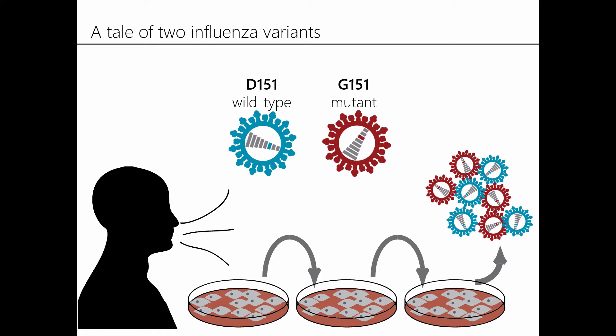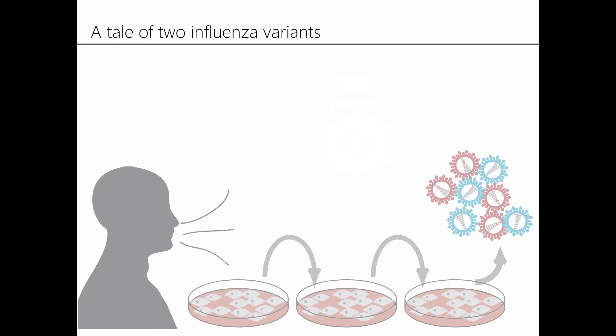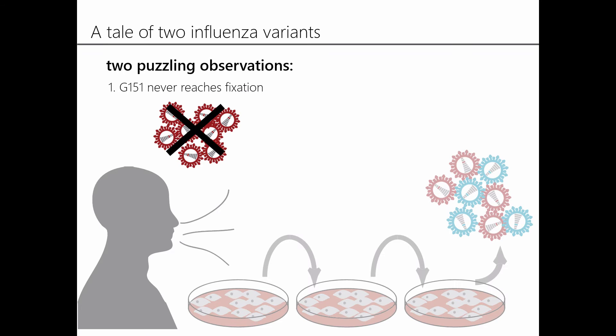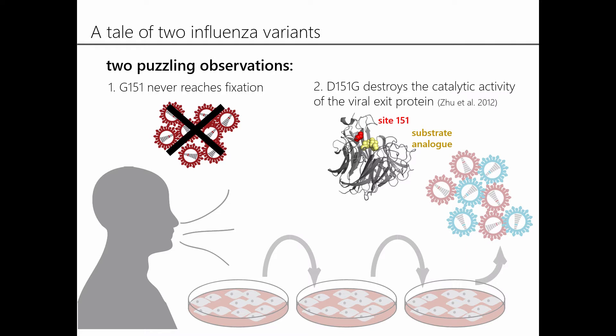Initially, people thought that this mutation was probably just a lab adaptation, which is very common for flu. But there were a couple of observations that suggested to us that this might not be the case. For one, the supposed lab adaptation never seemed to reach fixation — there were many reports of mixed viral populations, but it didn't seem to ever fix on its own. Second, another group did a biochemical study of the D151G mutation and found that it actually destroys the catalytic activity of the viral exit protein. We couldn't really think of a good reason why this loss-of-function mutation would constitute an adaptation.